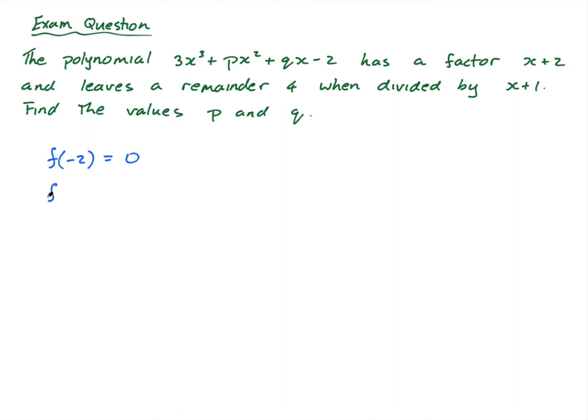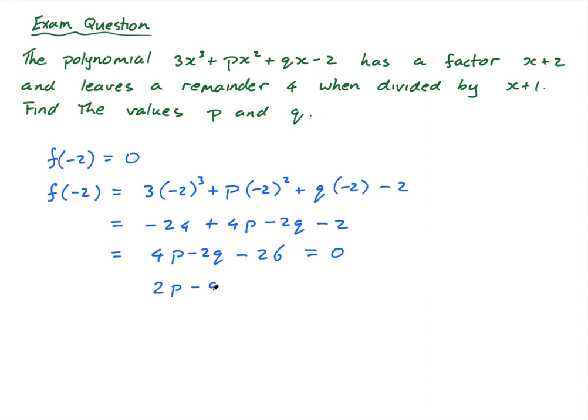Let's sub that in. f(-2) equals 3 times (-2) cubed plus p times (-2) squared plus q times (-2) minus 2 equals, negative 8, negative 24, plus 4p minus 2q minus 2, and I'll simplify that to 4p minus 2q minus 26, and this equals 0. So I can divide by 2, 2p minus q minus 13 equals 0. First equation.